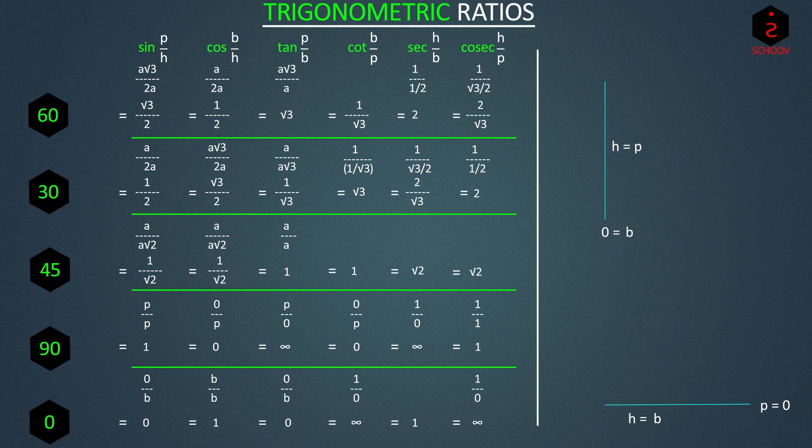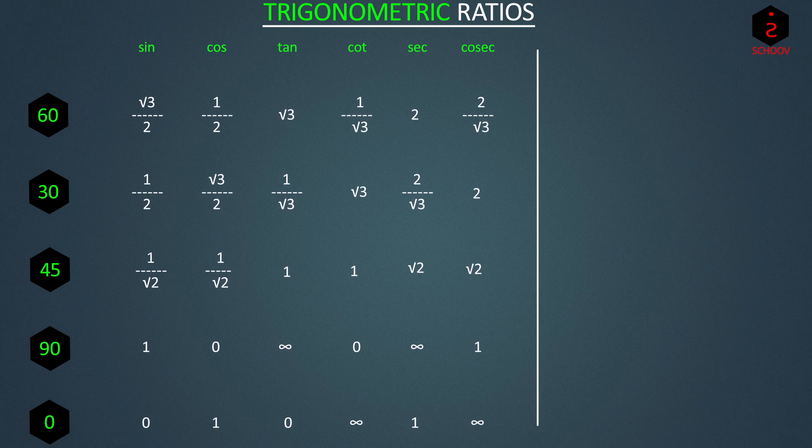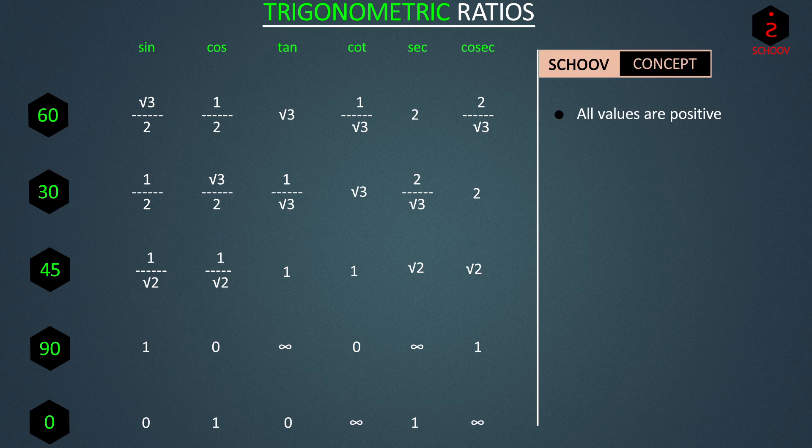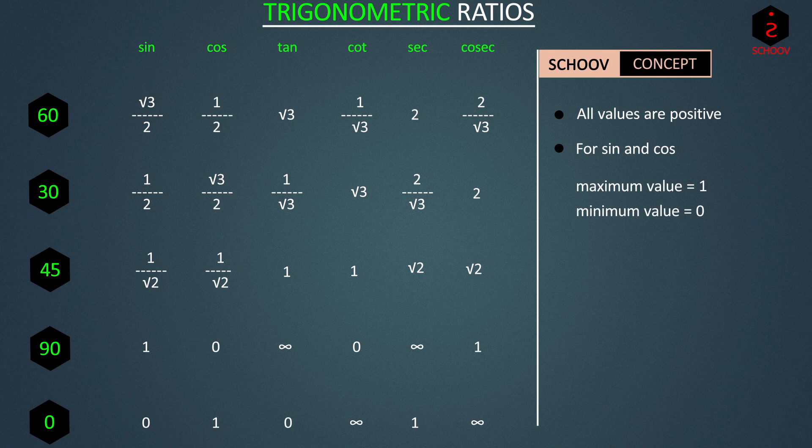So this is the table for all the ratios of these five angles. This was very straightforward. You just need to absorb the concept of base and perpendicular. We can note some observations here. For all angles, values are positive. For these angles, maximum value of sin and cos is 1, and minimum is 0. Actually, for all angles from 0 to 90, values of sin and cos lie between 0 and 1.